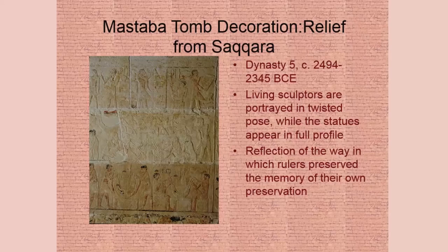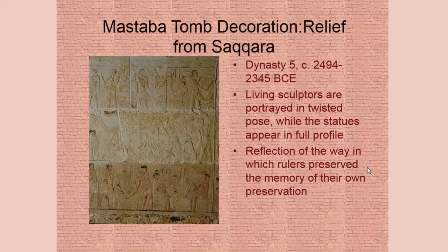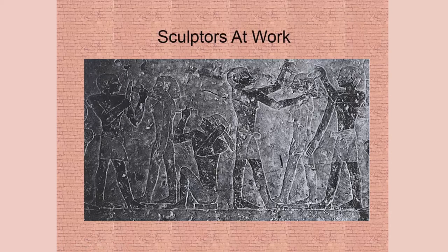We already looked at the sculptors at work and now you can see them in context. This is a whole relief, somewhat in progress — you can notice it's drawn out on top; those are the living sculptors, portrayed in twisted poses, while the finished statues appear in full profile. King Zozer is preserving the memory of his own preservation — teaching how to create imagery, demonstrating his power, and commissioning images for this tomb to last throughout thousands of years.